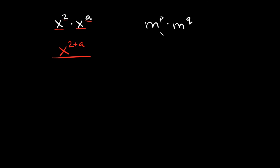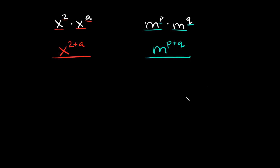Let's do it one more time: m raised to the p times m raised to the q. You have an m and an m, so keep the m and add the exponents: p plus q. There are no like terms to combine, so your simplified answer is m to the p plus q.